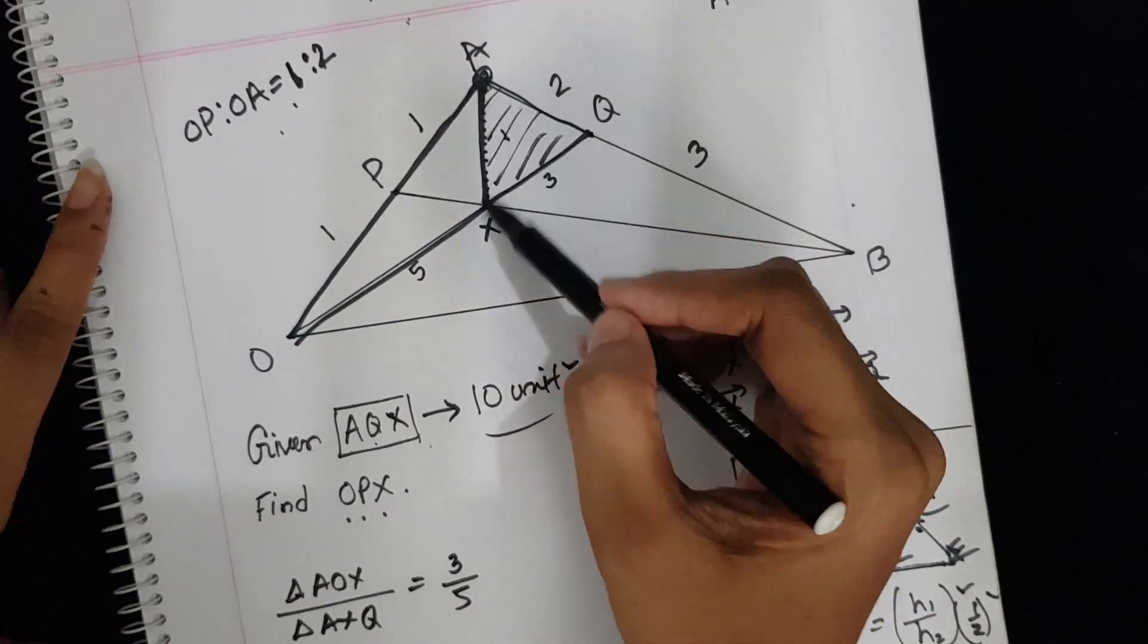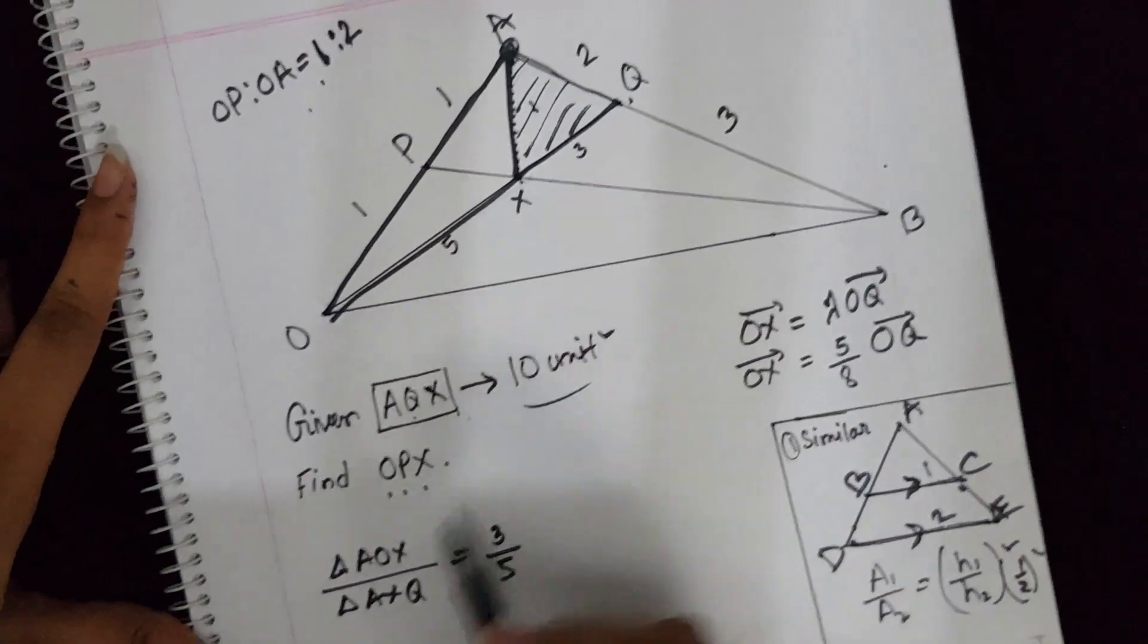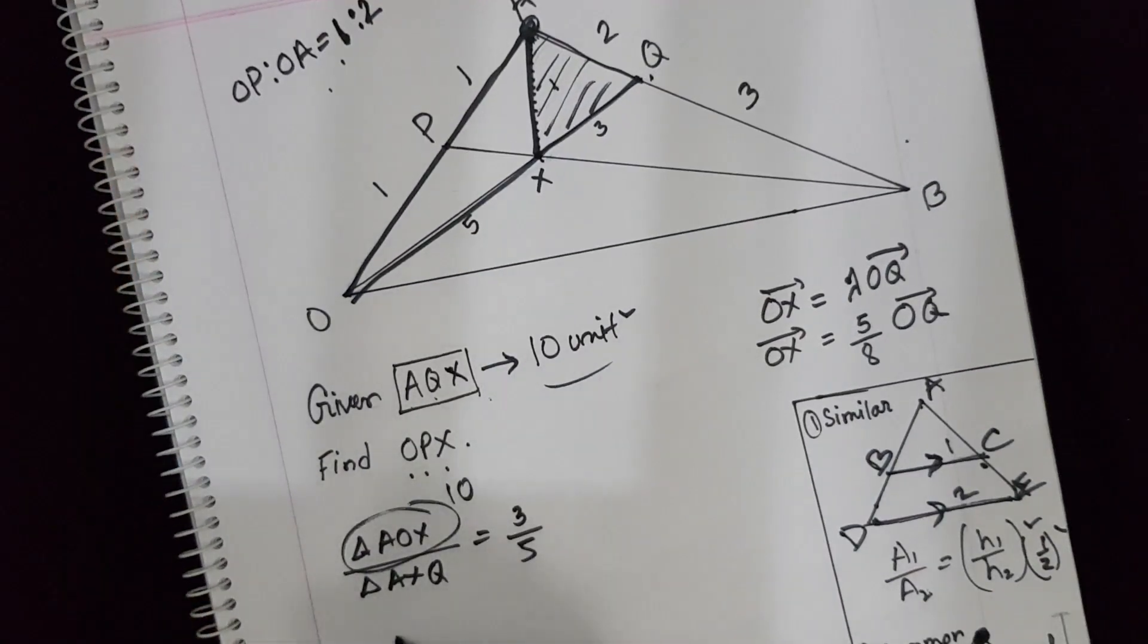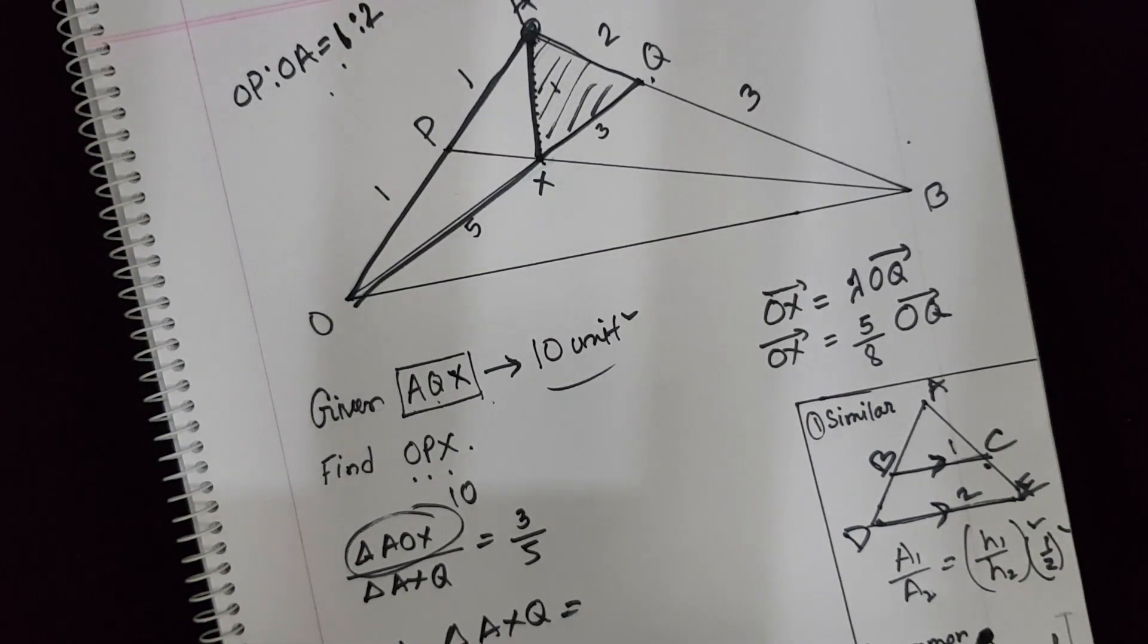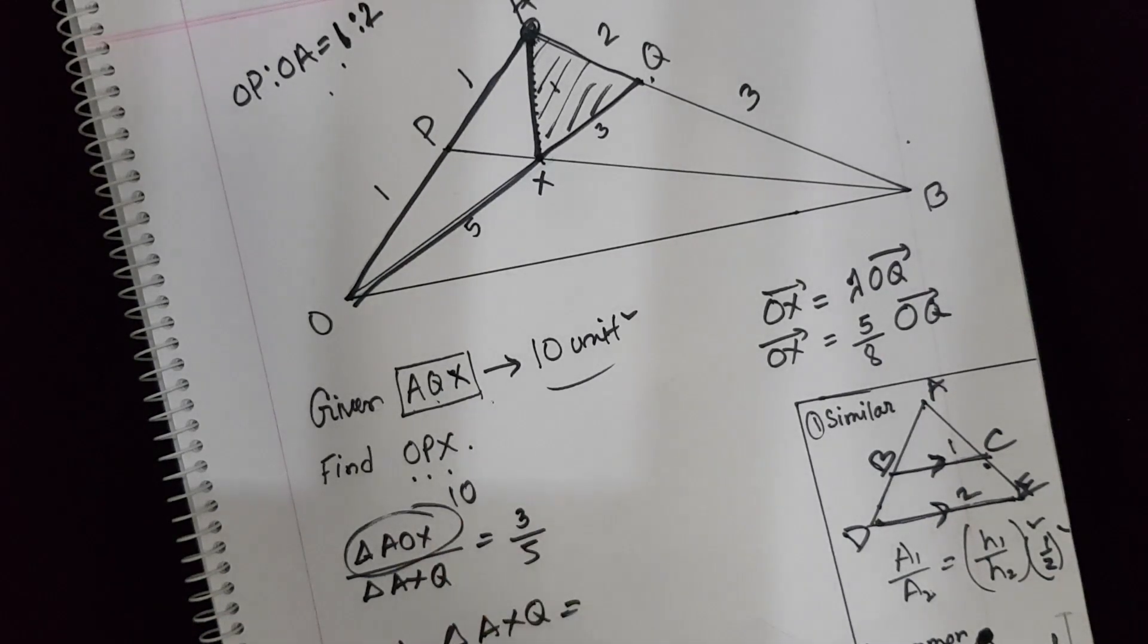Since we know the area of AXQ which is 10, this value is 10. By solving this, you will get the value of area of triangle AOX which is 50 by 3.